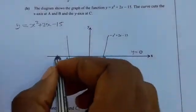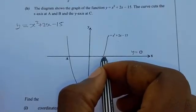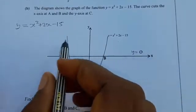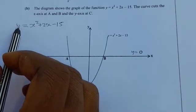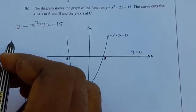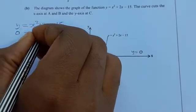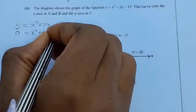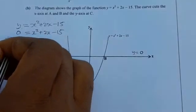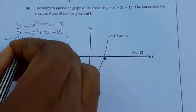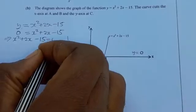Because along the x-axis the y-coordinate is 0 and B is on the x-axis, wherever there is y in the equation we replace it with 0. So we get: 0 = x² + 2x − 15, which can be written as x² + 2x − 15 = 0.